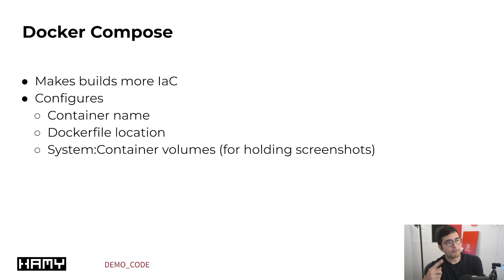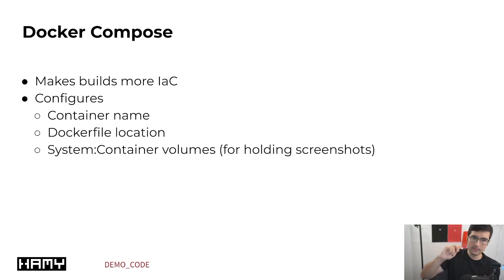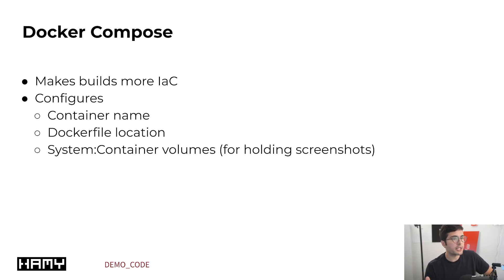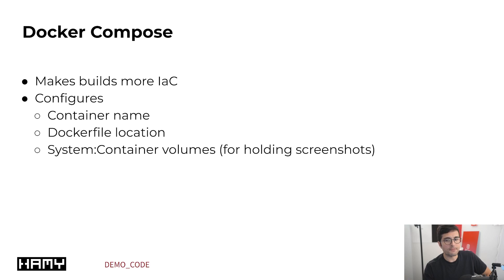So why Docker Compose? A lot of people just use the straight Docker container with command line arguments, which is fine. But in my opinion, Docker Compose makes Docker better because it allows you to move things out of command line arguments and ad hoc notes into an actual configuration file. Our Docker Compose does a few things you'd otherwise have to remember: setting the container name, setting the Dockerfile location and context — very helpful when you have a lot of different containers in one repo — and setting up a deterministic system-to-container volume mapping so we can access those screenshots later. You can do this via command line, but why not just put it in a file that actually does the thing.